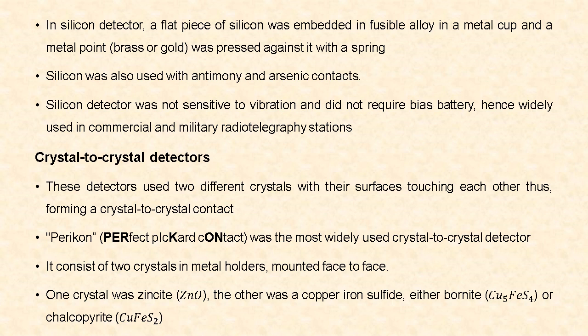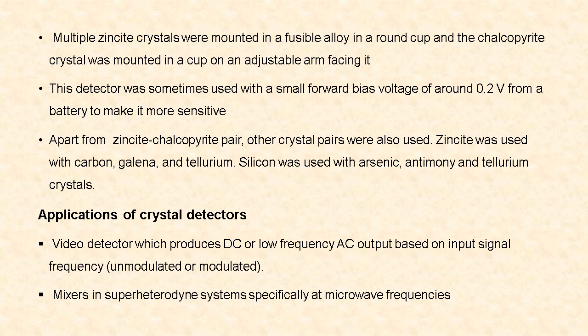One crystal was zinc oxide and the other crystal was copper iron sulfide, which may be either bornite or chalcopyrite. Multiple zinc oxide crystals are mounted in a fusible alloy in a round cup, and the chalcopyrite crystal is mounted in a cup on an adjustable arm facing it. This crystal-to-crystal detector was sometimes used with a small forward bias voltage of around 0.2 volt from a battery to make it more sensitive.